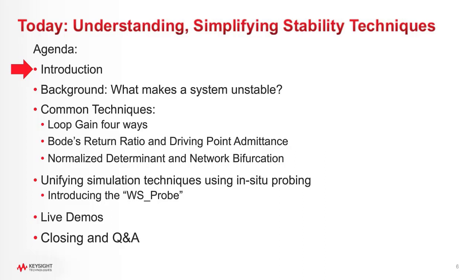I'll give you a minute to think about it. The network determinant is actually a consideration in the stability factor — it's called the stability measure. The correct answer is that it's based on the assumption that the unloaded network is stable. The sweep points issue — if you don't have enough sweep points, you can certainly miss high-Q oscillations, but that's not a problem specific to K-factor. And K-factor only applies to the external parts of an amplifier — the source and load terminations. It looks like most people got the right answer.